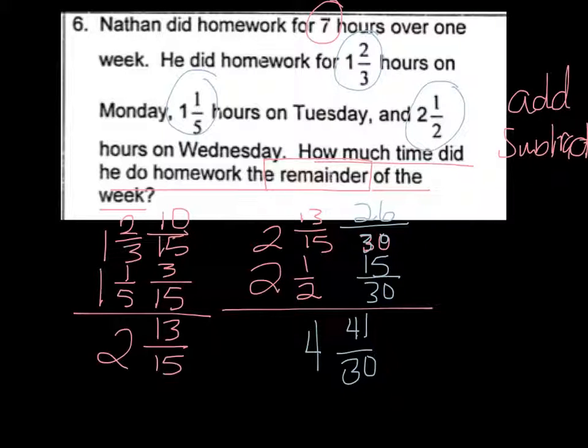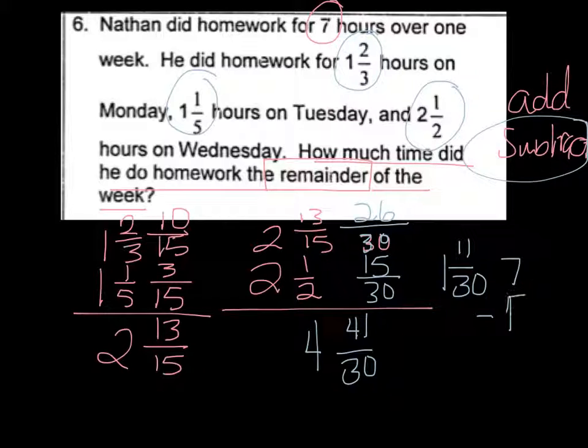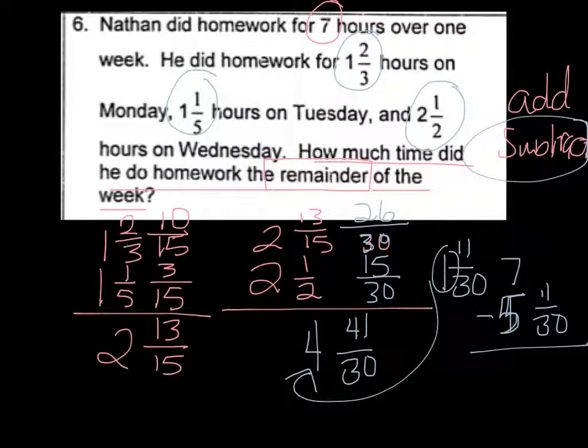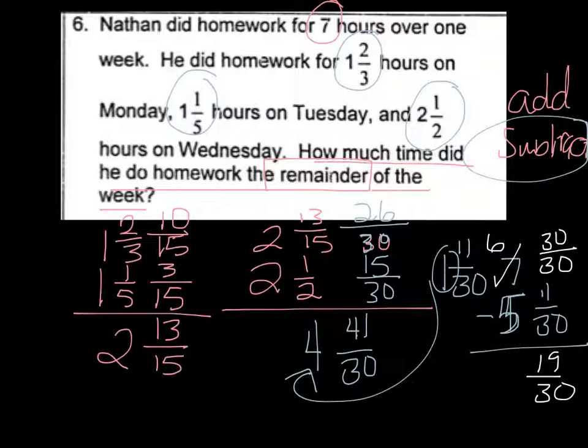And of course, we'd want to change forty-one-thirtieths into a mixed number. So we divide that and we'd get a one and eleven-thirtieths. And then our final step is to subtract that from seven. So seven minus one. Oh, I mean five. Taking that whole number and adding it to the four. Five and eleven-thirtieths. So this would become a six. And you'd borrow a thirty-thirtieths. And then thirty minus eleven gives you nineteen-thirtieths. And six minus five gives you one. So one and nineteen-thirtieths is how much more time he studied that week.